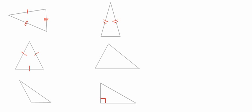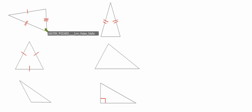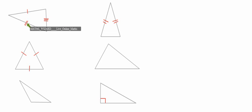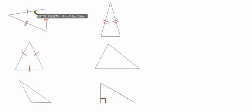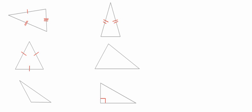We look at triangles and we have six different triangles. First of all, let's have a look at this triangle over here. These lines indicate that these sides are not equal to one another — one line, two lines, and three lines — indicating that all these lengths are different. None is equal to the other. When all sides are different, we call this triangle a scalene triangle.